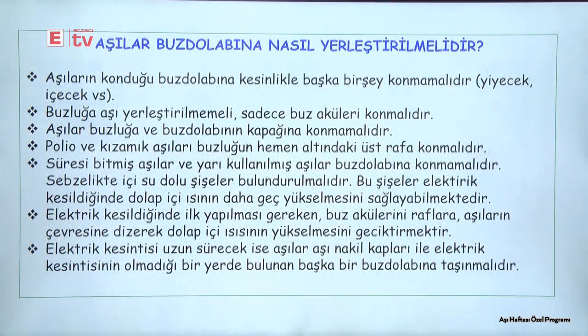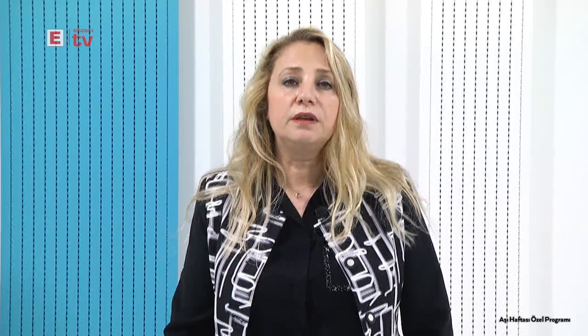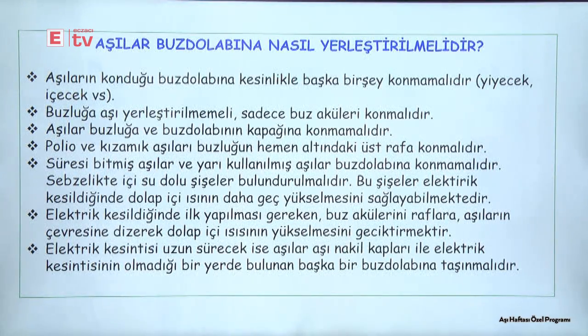Aşılar buzdolabına nasıl konulmalıdır? Aşıların konulduğu buzdolabının içerisine başka hiçbir şey, yani yiyecek ve içecek konulmamalıdır. Buzluğa aşı yerleştirilmeyecek; buzluk kısmına sadece buz akülerinin konulması gerekiyor. Polyo ve kızamık aşıları buzluğun hemen altındaki üst tarafa konulmalıdır. Süresi bitmiş ya da yarı kullanılmış aşılar tekrar buzdolabına konulmamalıdır. Sebzelik kısmına su dolu şişeler konulmalıdır; elektrik kesintisinde bu şişeler buzdolabı içerisindeki sıcaklığın yükselmemesine yardımcı olacaktır.